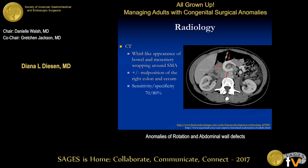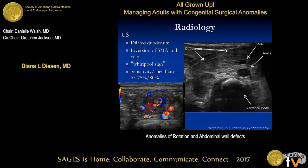On CT, you'll see a whirl-like appearance to the bowel and the mesentery — that is the bowel and the mesentery wrapping around the SMA, demonstrated here. Keep in mind that the position of the cecum cannot be used to definitively say a patient is not malrotated. On ultrasound, you'll have an inversion of the SMA-SMV relationship, and you can have this whirlpool sign as the bowel and mesentery wrap around the vessels.